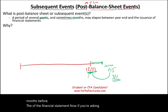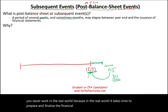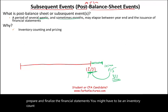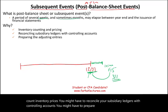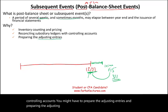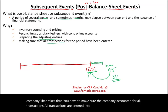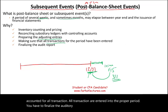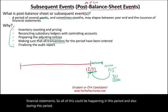In the real world, it takes time to prepare and finalize the financial statements. You might have to do an inventory count, inventory prices. You might have to reconcile your subsidiary ledgers with controlling accounts. You might have to prepare the adjusting entries, and in preparing the adjusting entries you have to collect information about the company — that takes time. You have to make sure the company accounted for all transactions, that all transactions are entered into the proper period. You have to finalize the audit report, which takes time. Then you issue the financial statements. So all of this could be happening in this period.